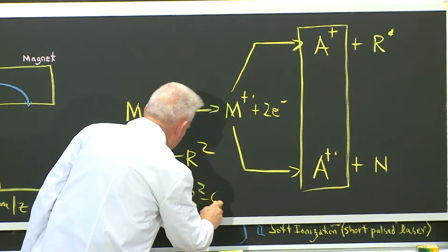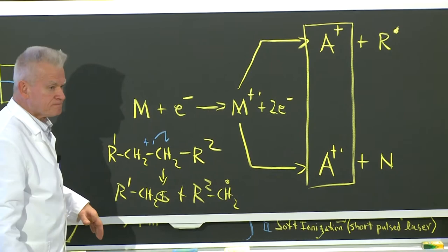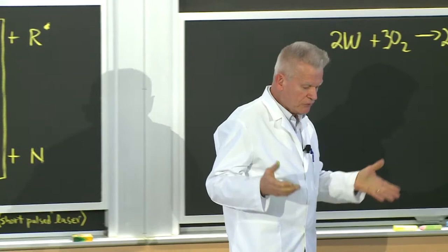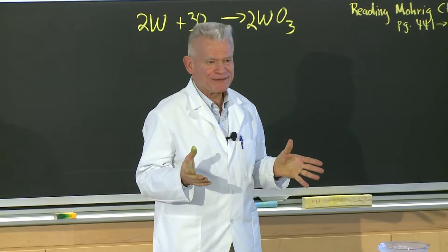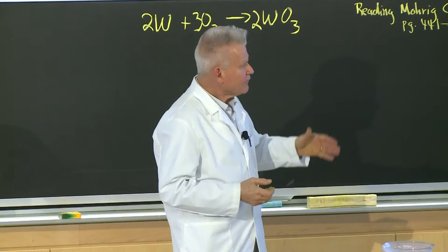Now, sometimes some of these bigger molecules, these proteins and peptides, you don't see molecular ion peaks in the mass spectrum. Even for some small molecules, you may not see them. So we have another technique, a softer ionization technique called chemical ionization that we can use.